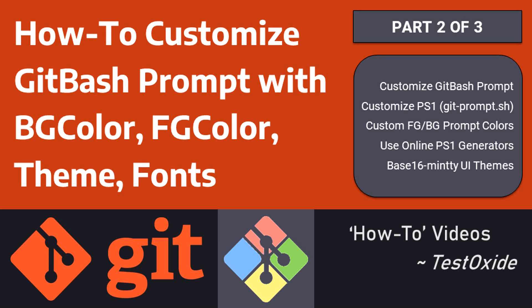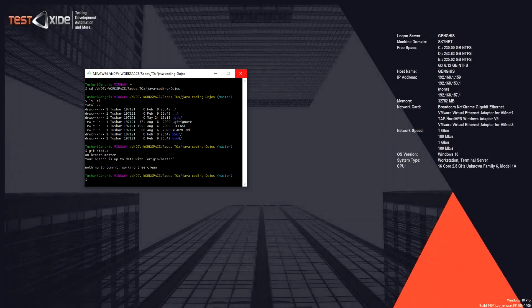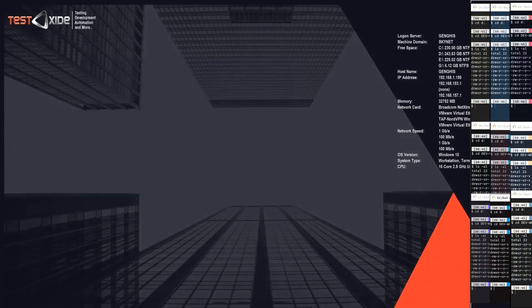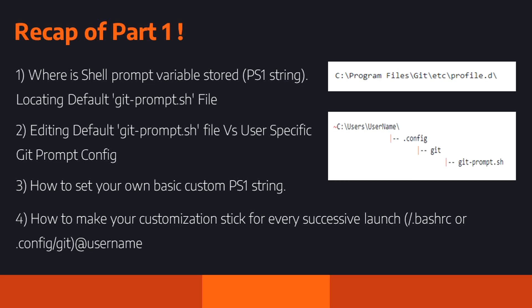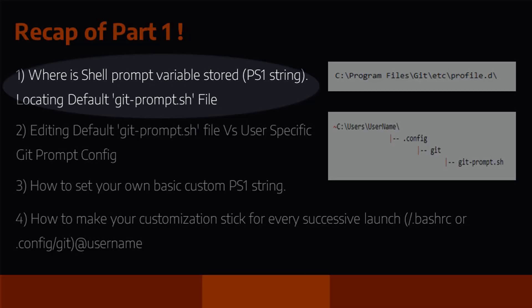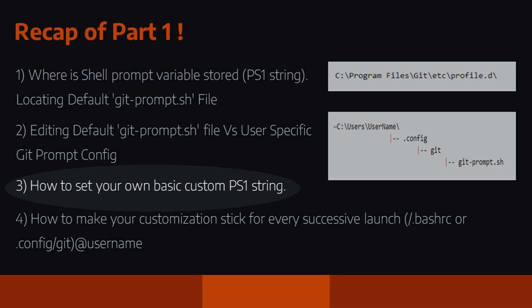Welcome to Git Bash customization Part 2. In this session we'll be transforming our default Git Bash from the default look to a much improved one. As a quick recap of Part 1, the default Git Bash prompt settings are stored in a file called git-prompt.sh inside a variable called PS1.